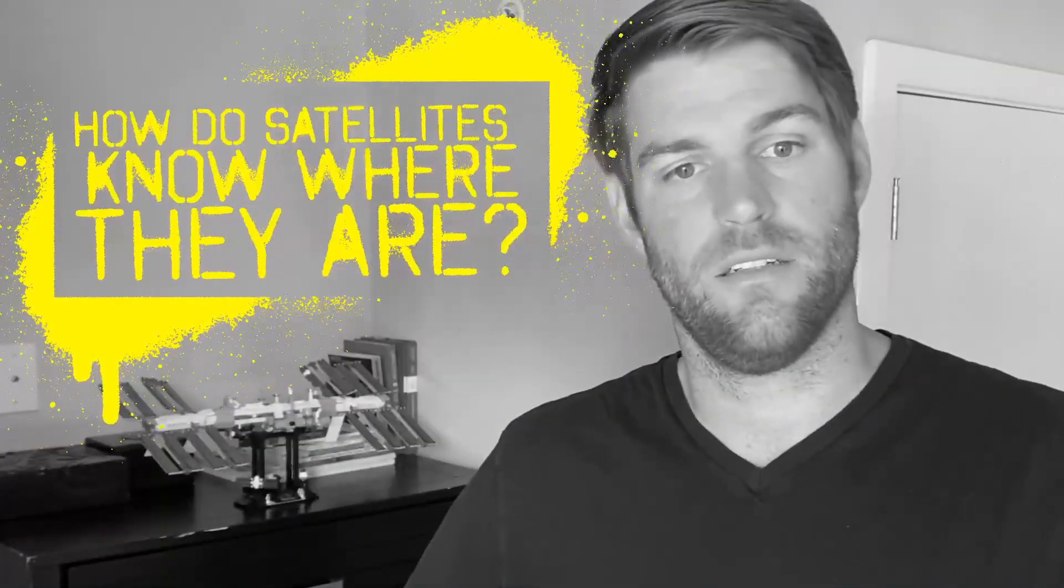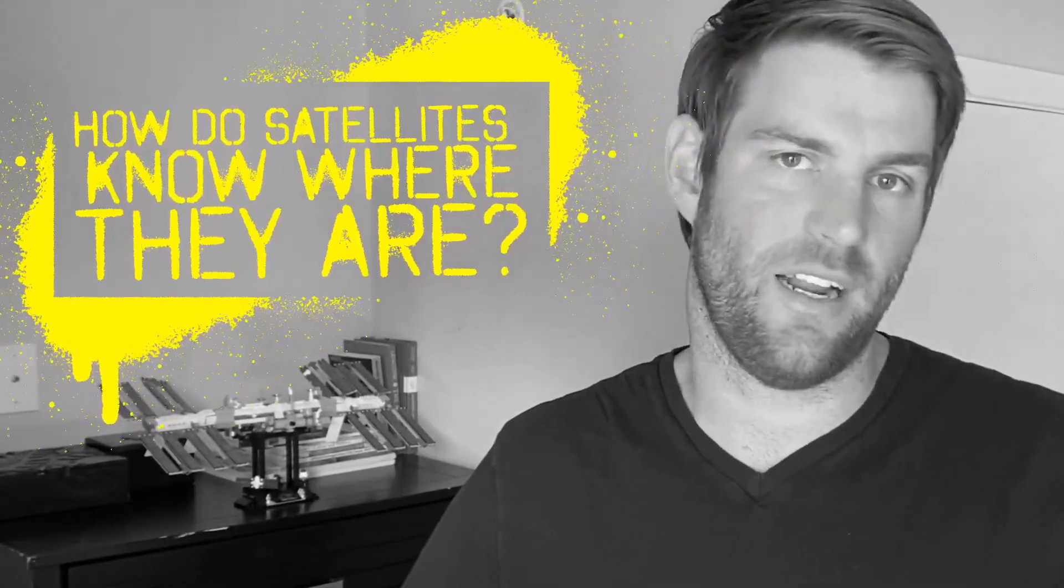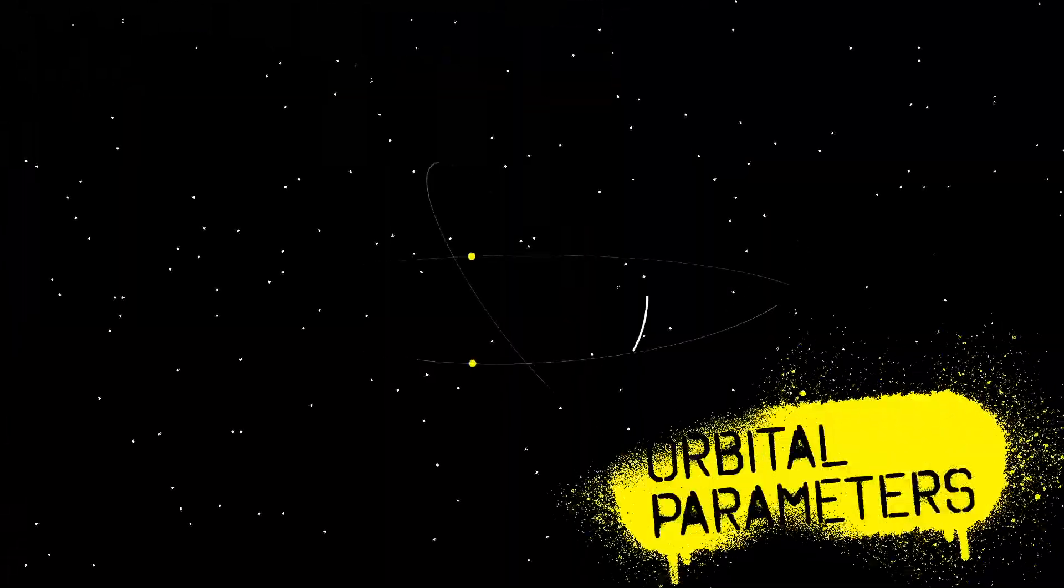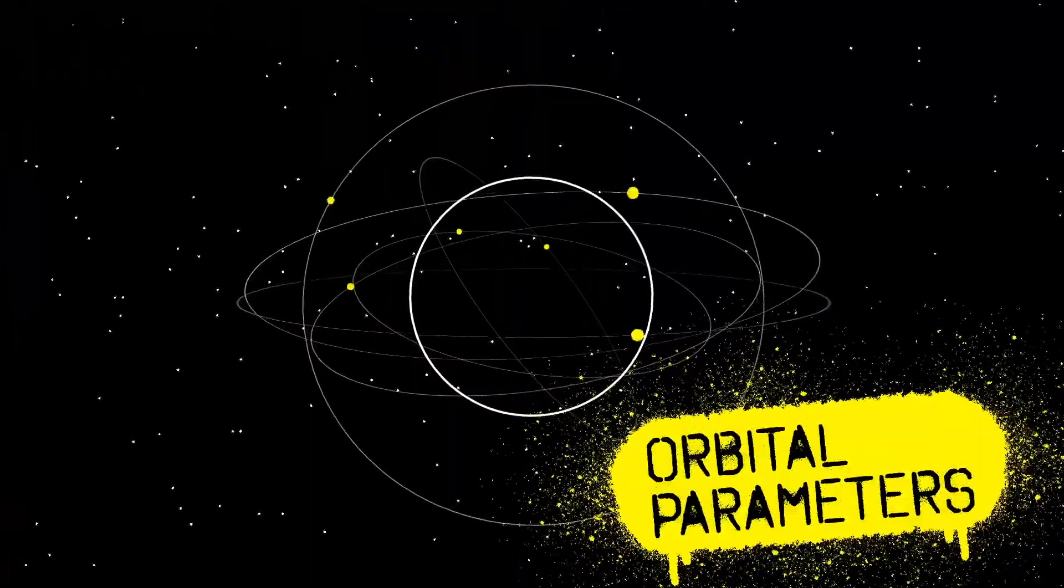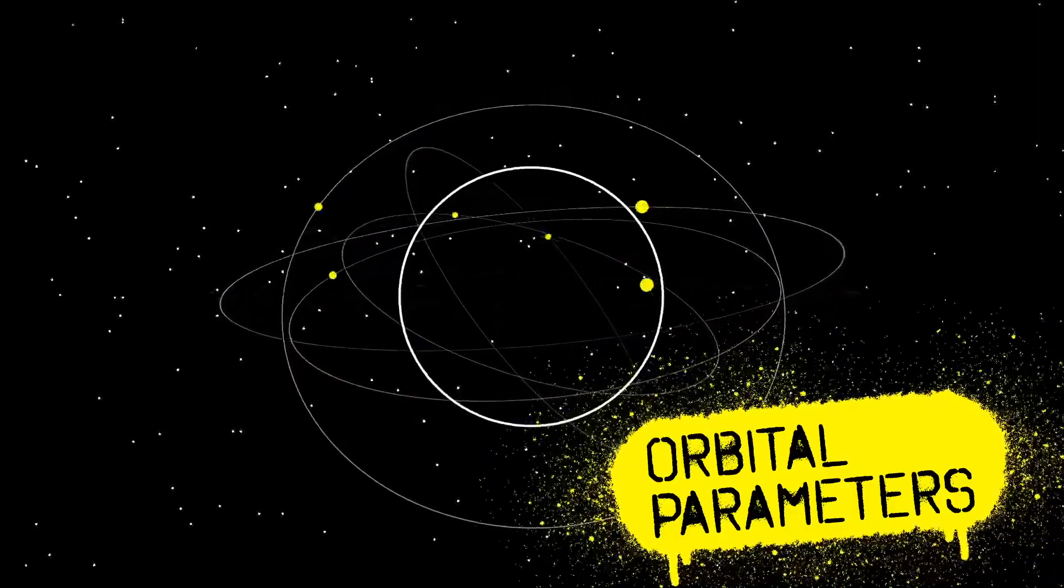How do satellites know where they are? There are actually two completely separate dimensions that we need to consider with satellites. The first being orbital parameters. This describes the movement of the satellite over time, kind of like referencing a flight plan to tell where a plane is.